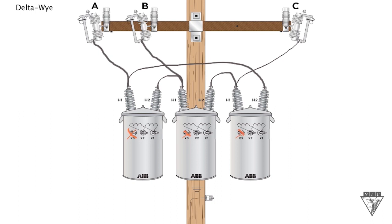Now we'll go ahead and do the connection. So the first thing we're going to do is tie our X2 bushings together. Now that they're tied together, we're going to run it down and take it to ground, and that's our secondary neutral connection. X2 bushings are all tied together, and then you run it down to your ground.